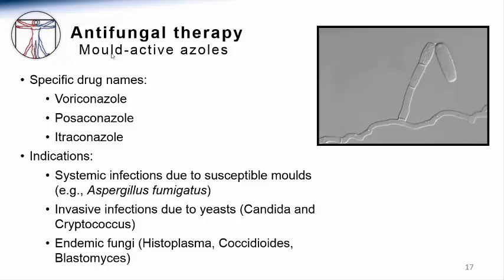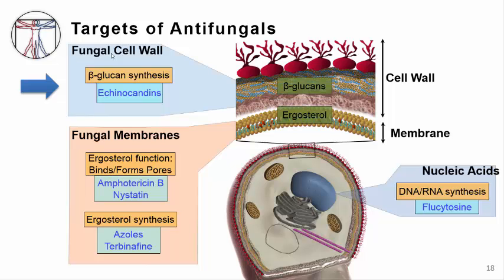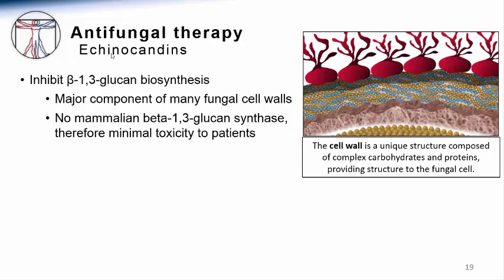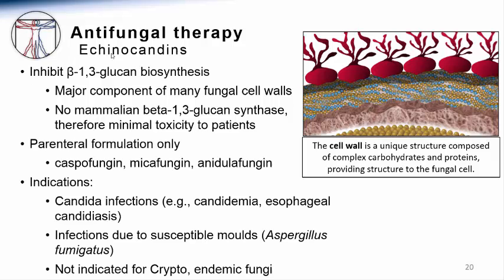These azoles are also indicated for treatment of infections due to endemic fungi such as histoplasmosis, coccidioidomycosis, and blastomycosis. One of the newest classes of antifungal agents targets the fungal-specific cell wall, which is composed primarily of complex carbohydrates such as chitin and glucans. The echinocandins inhibit the enzyme that makes beta-1,3-glucan, one of the most abundant cell wall carbohydrates. Since humans do not have this enzyme nor make beta-glucans, the echinocandins have minimal toxicity. Available echinocandins include caspofungin, micafungin, and anidulafungin, and these medications are only available in IV formulations, although oral echinocandins are currently in development.